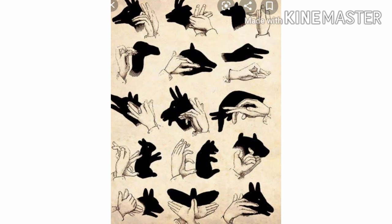Shadows give us some information about the shapes of objects. Sometimes shadows can also mislead us about the shape of an object. This was about shadows, but we have a little more to study about shadows, so let us move to Activity 4.